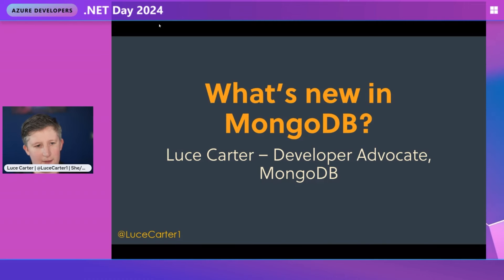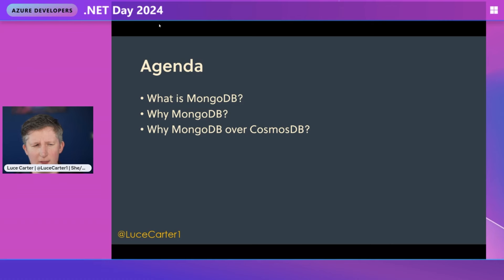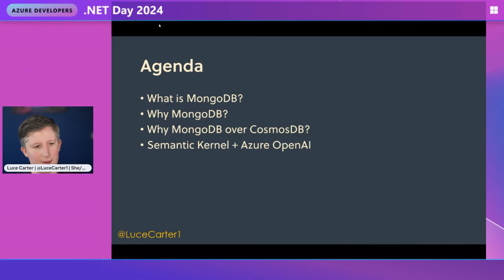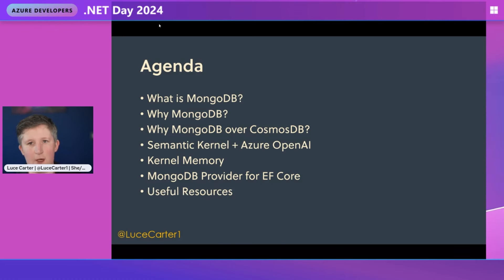We're going to start off with what is MongoDB, then answer the question why MongoDB — and more importantly for Azure Developers, why MongoDB over Cosmos DB. Then we'll look at some code things around Semantic Kernel and Azure OpenAI. Then we'll have a look at Kernel Memory. Then we'll end off with MongoDB provider for EF Core — what that is and why it's exciting. Then I'll give you some useful resources.